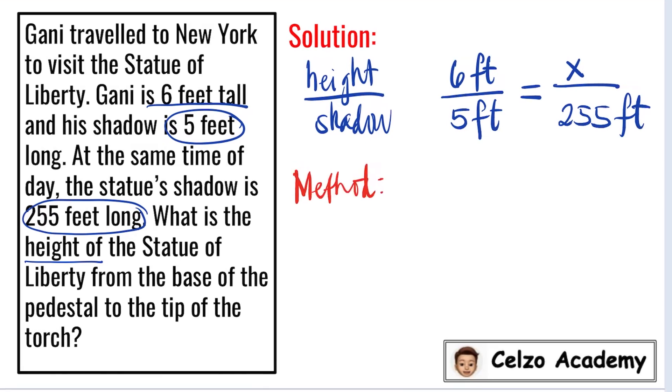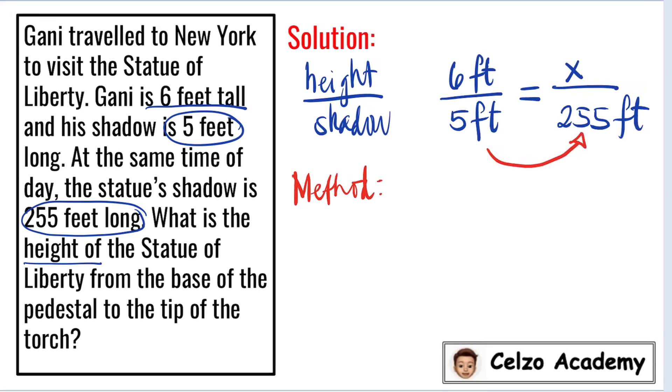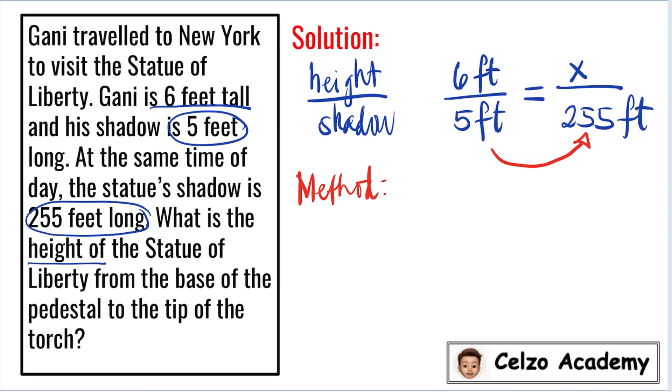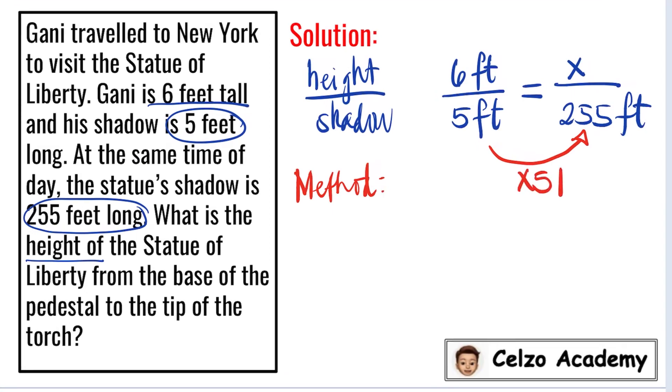let's take a look at the denominators, 5 feet and 255 feet. What will you multiply with 5 to get 255? You can do that by dividing 255 by 5, and this is times 51. When you multiply 5 times 51, that is equal to 255.